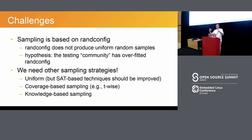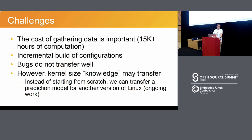Another challenge is cost. If we have to redo all our experiments at each commit or each release, no way. There are two ideas: one is incremental build of configurations — right now each time we build a configuration we start from scratch because of randomness and to ensure no interference. Maybe we can be smart here and have a more incremental build. Another idea is to transfer prediction models. Bugs don't transfer well because fixes happen quickly, but kernel size models can hopefully transfer — we have knowledge accumulated over time, so we can transfer our prediction model from one version to another using transfer learning techniques, drastically reducing cost.